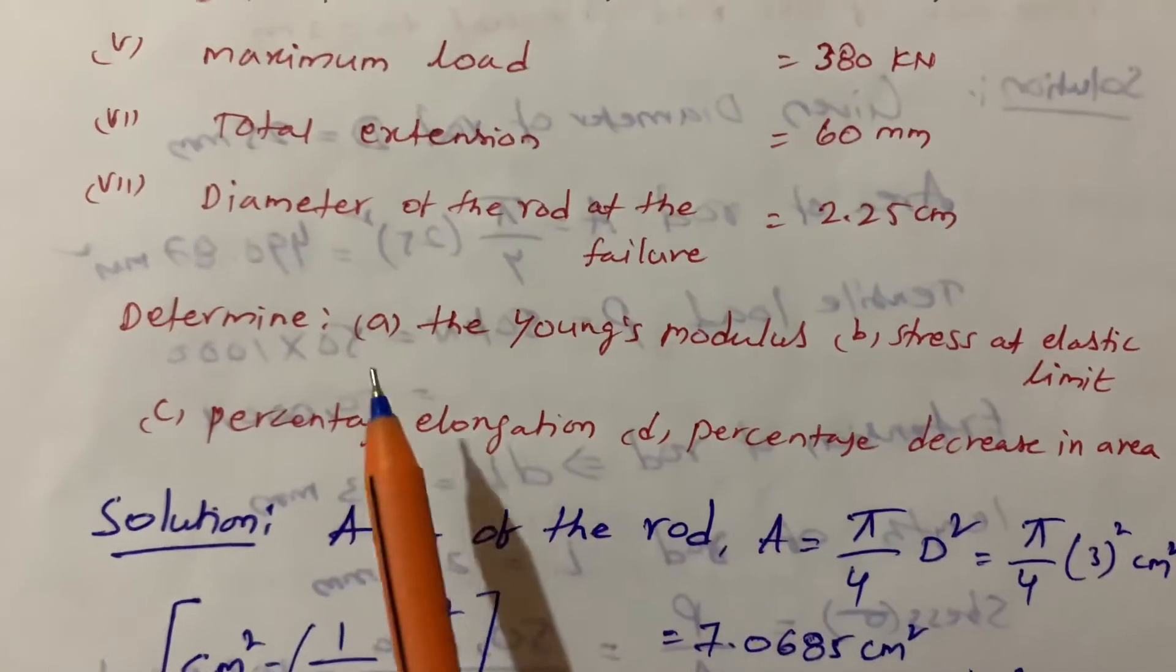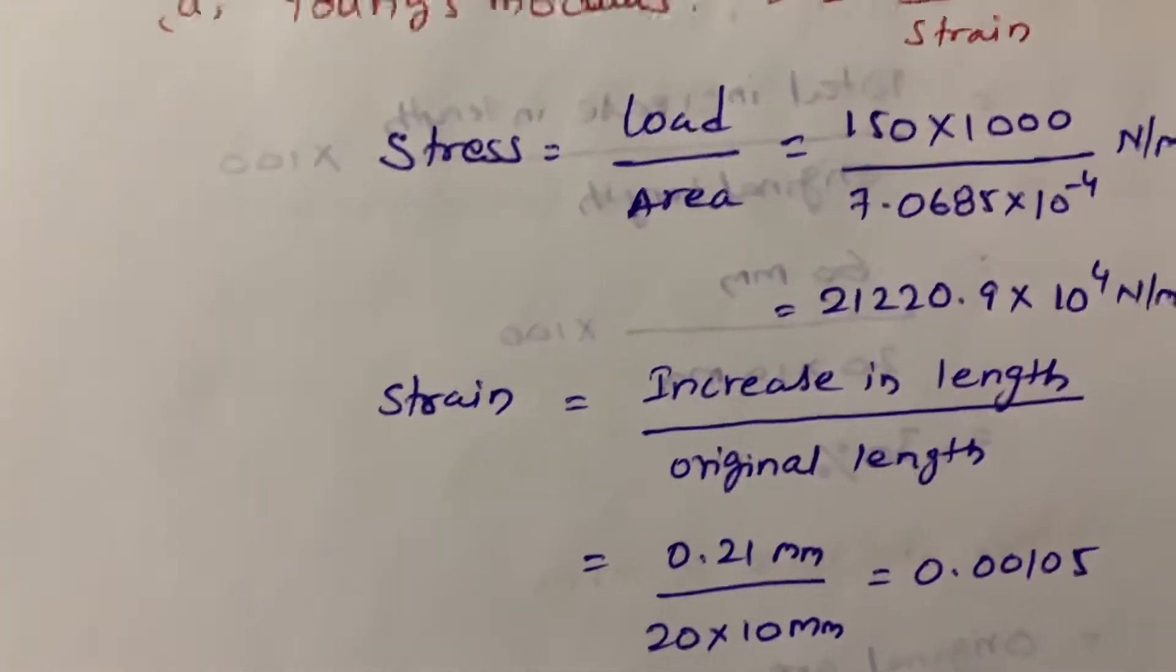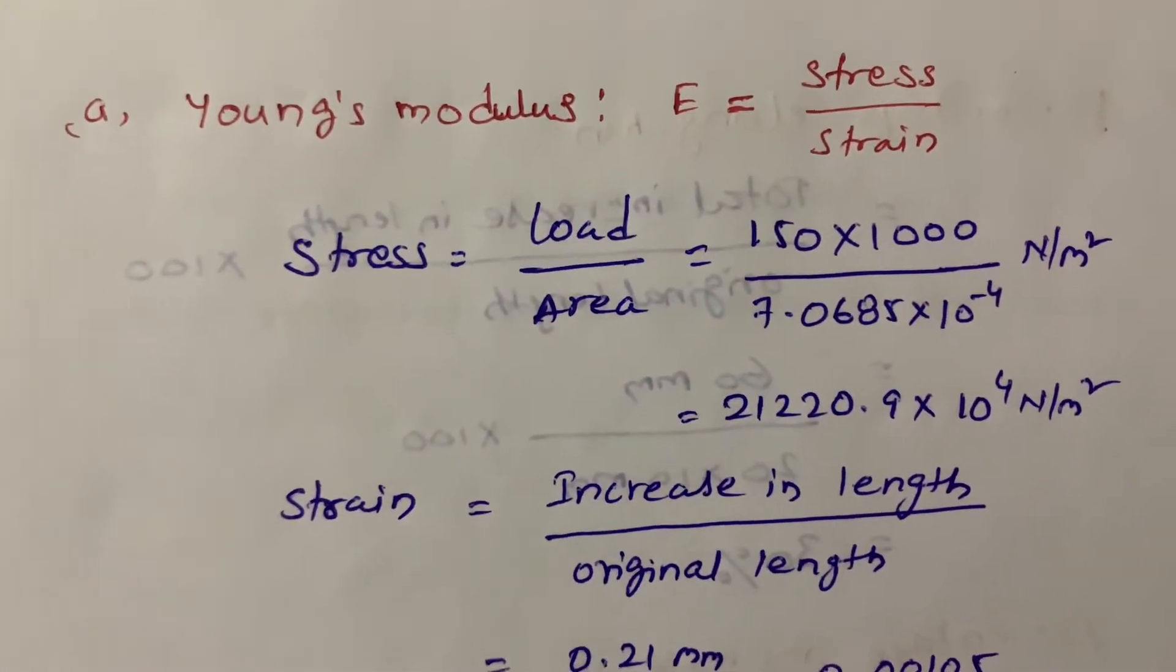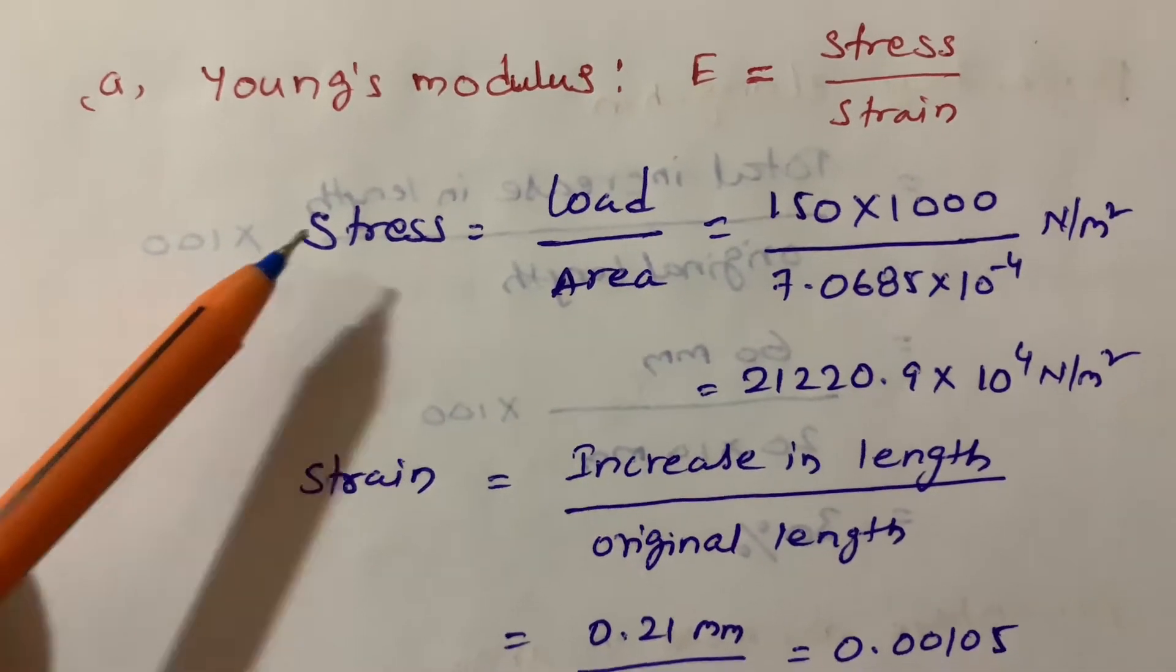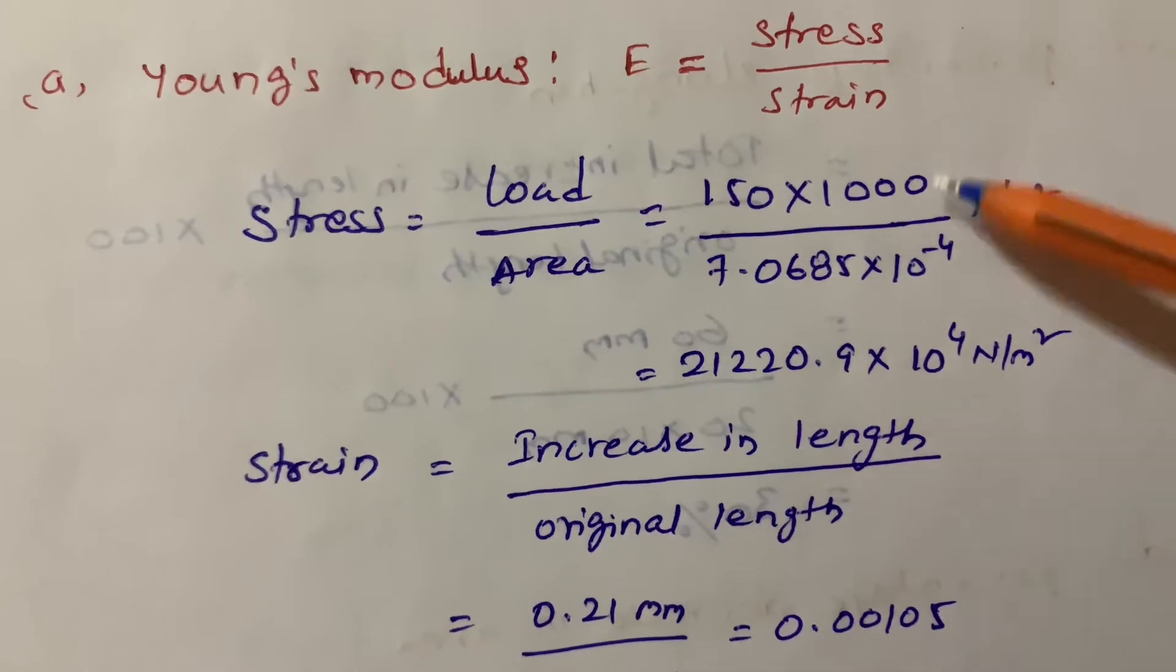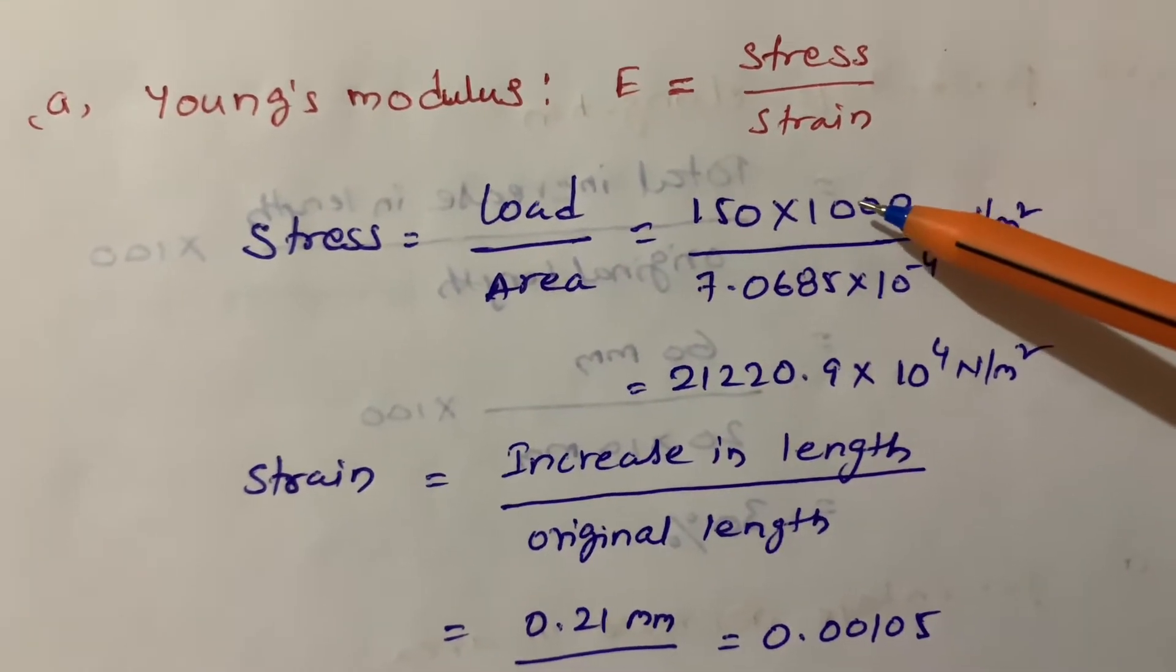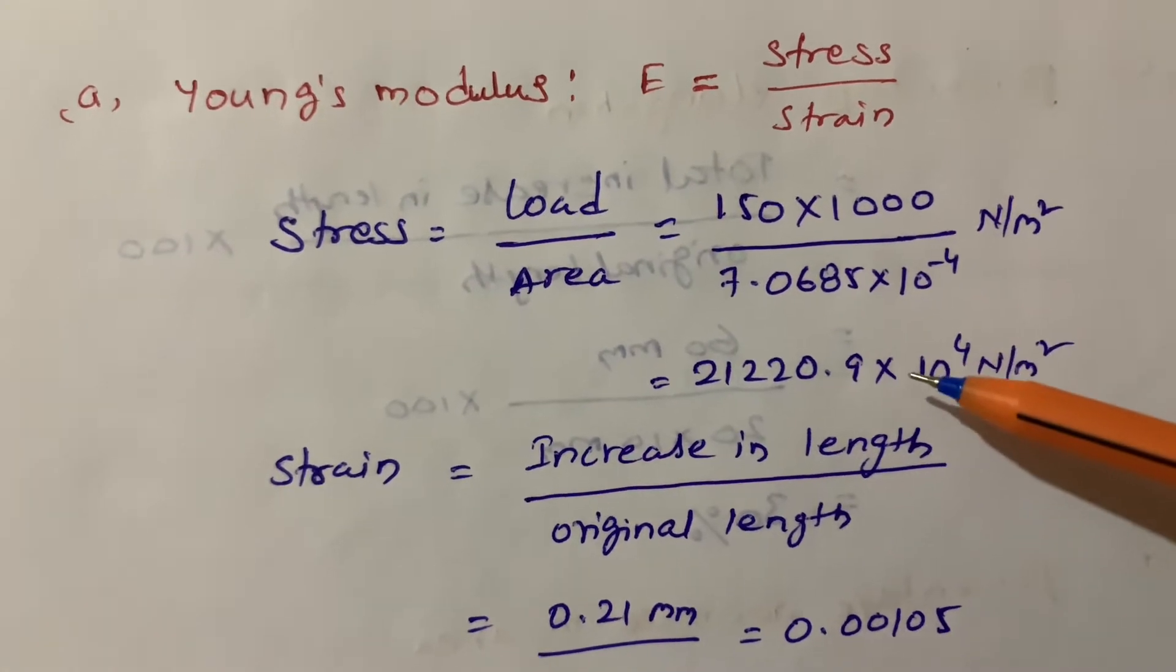After that we have to find out the Young's modulus. Young's modulus formula is stress by strain. Stress formula is load by area and strain formula is increase in length by original length. The load given is 150 kN and we calculated the area.